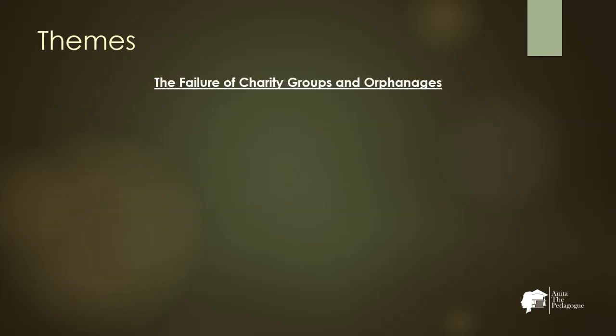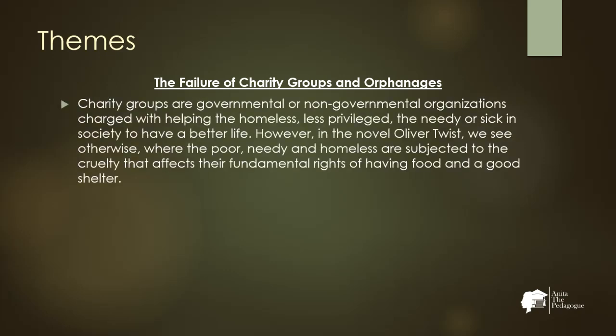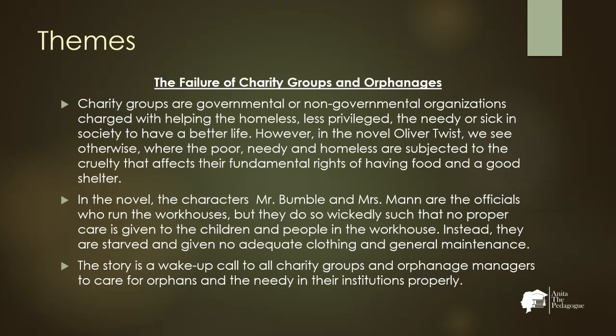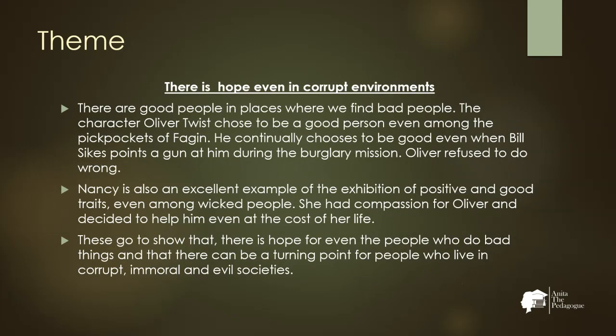The first theme is the failure of charity groups and orphanages. Charity groups are governmental or non-governmental organizations charged with helping the homeless, less privileged, needy, or sick. However, in Oliver Twist we see otherwise — the poor and homeless are subjected to cruelty that affects their fundamental rights to food and shelter. Characters Mr. Bumble and Mrs. Mann run the workhouses wickedly, starving children and giving no adequate clothing. The story is a wake-up call to all charity groups to care for orphans and the needy properly.